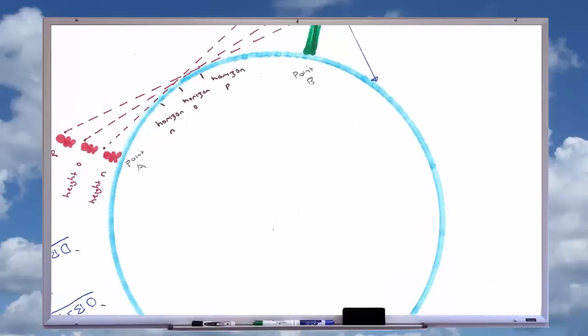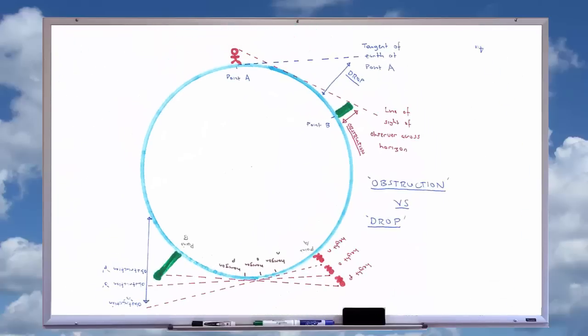To illustrate, imagine a distance of 36 miles between the observer at point A and the object being observed at point B. We have already shown that the earth ought to have dropped away by 864 feet from the tangent line intersecting the earth at point A.